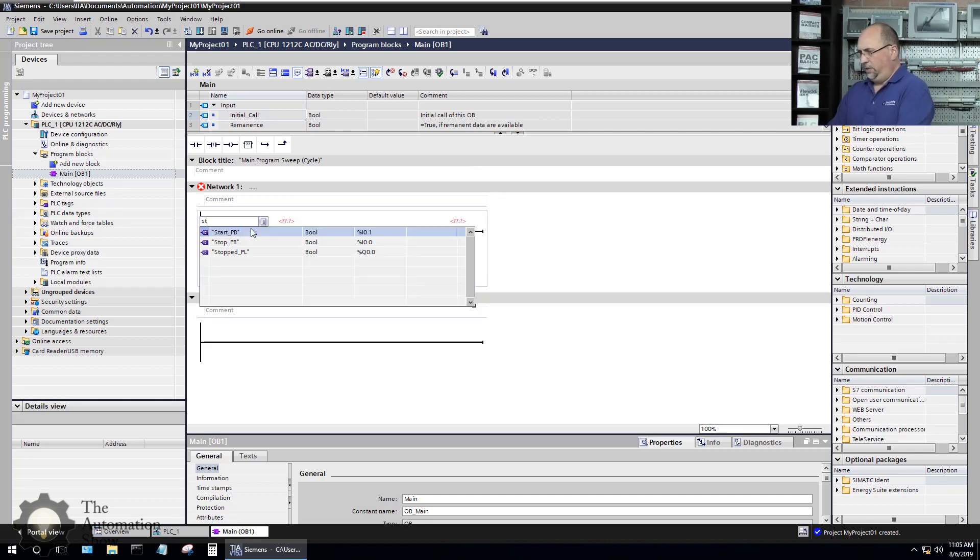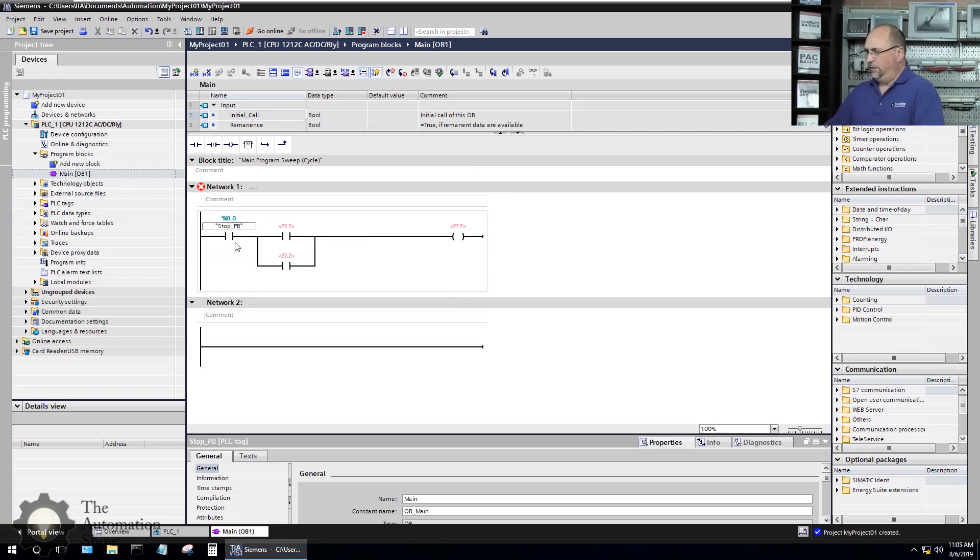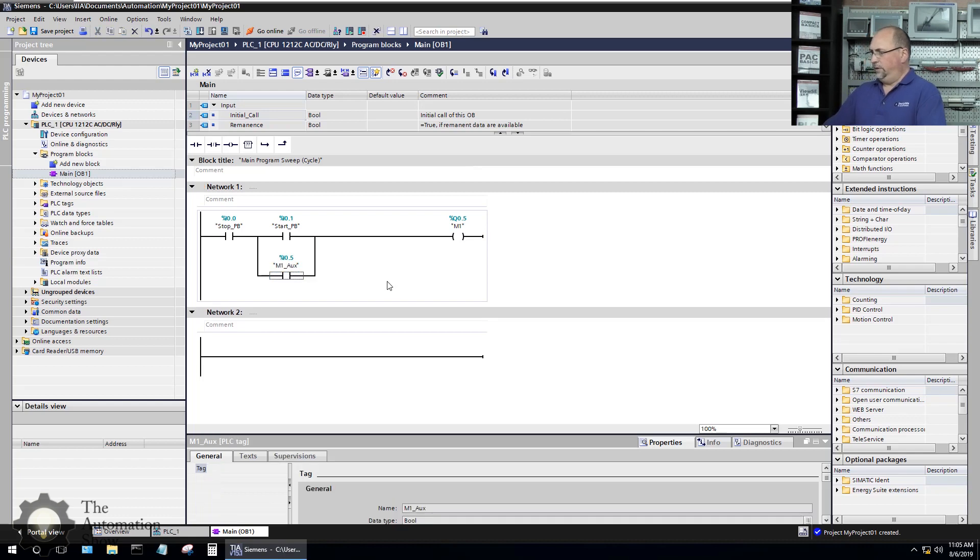So I'm going to put in stop here. This is my stop PB. I'll put in my start PB here. I'll put in my M1 motor here. And I'll put the auxiliary contacts here.